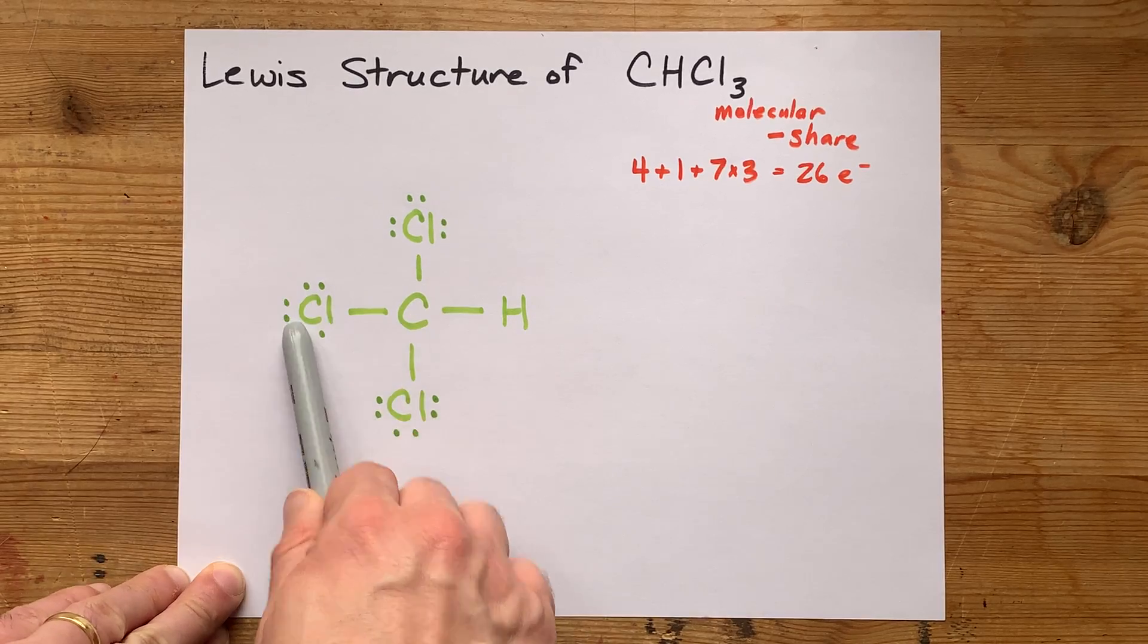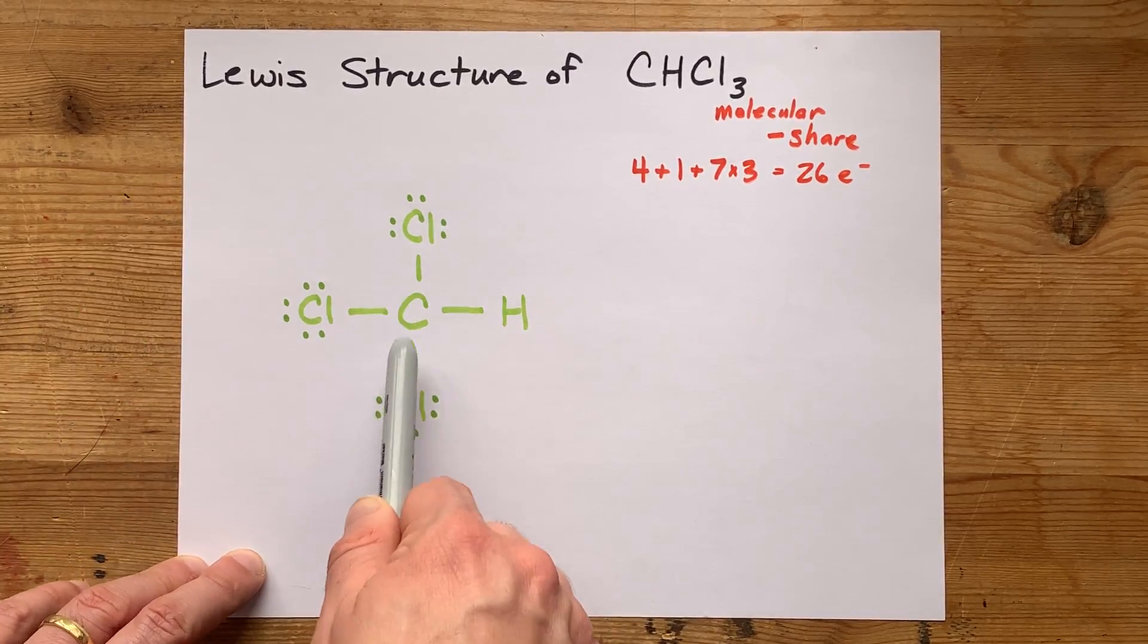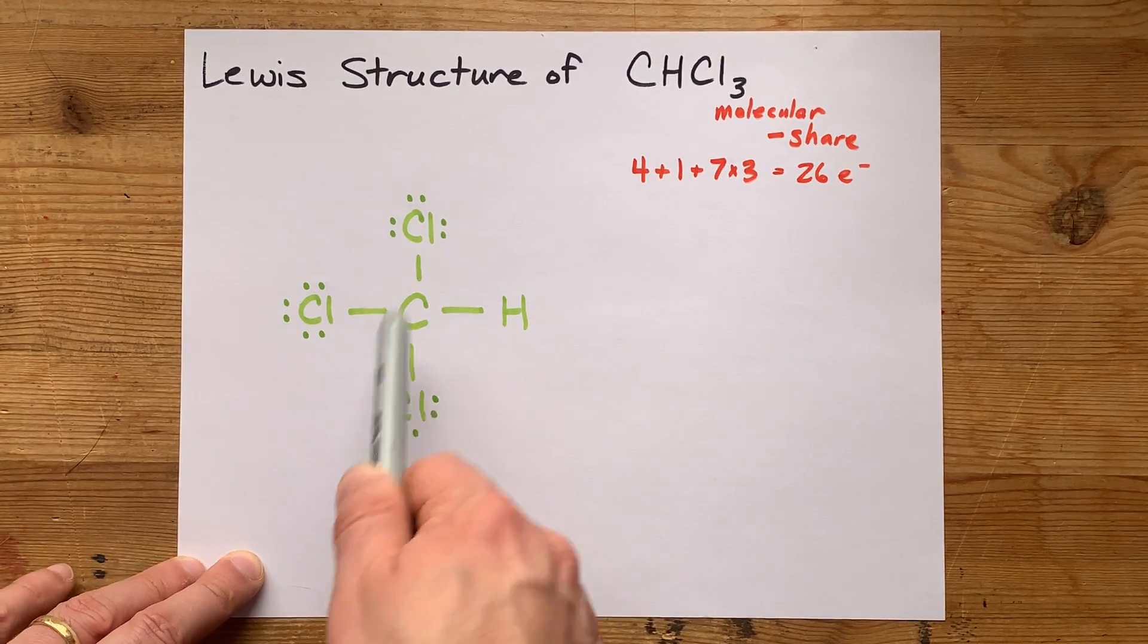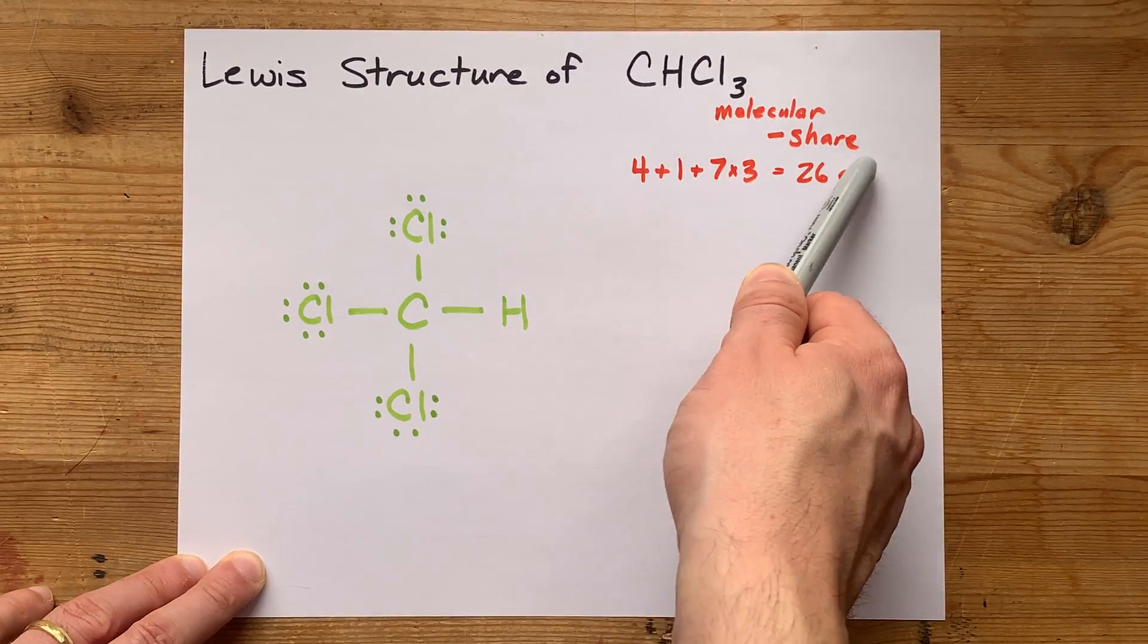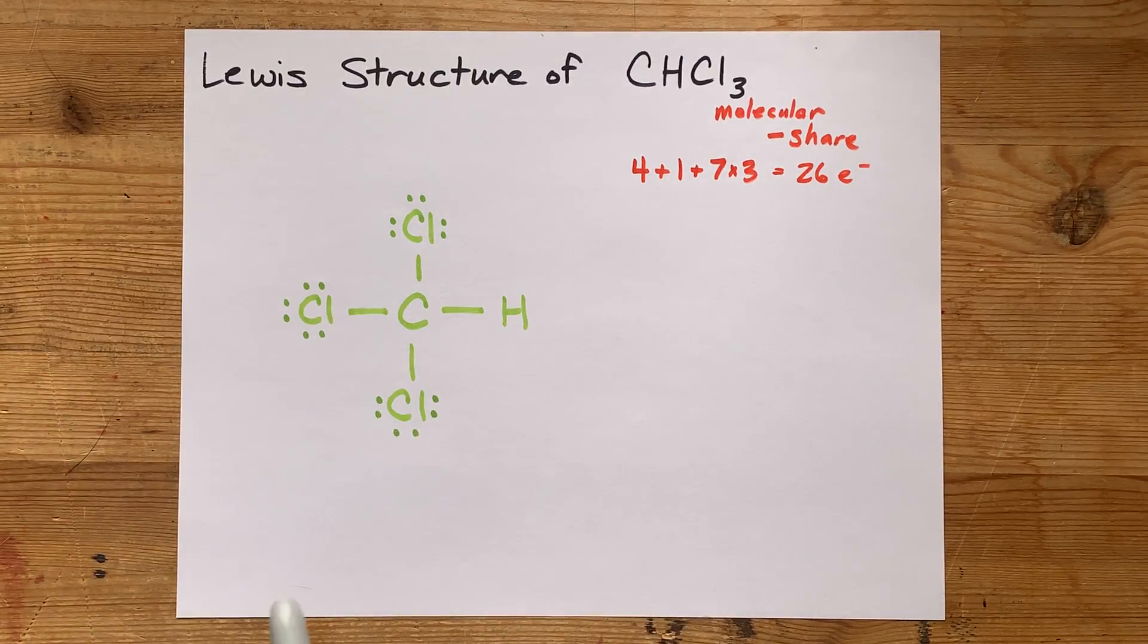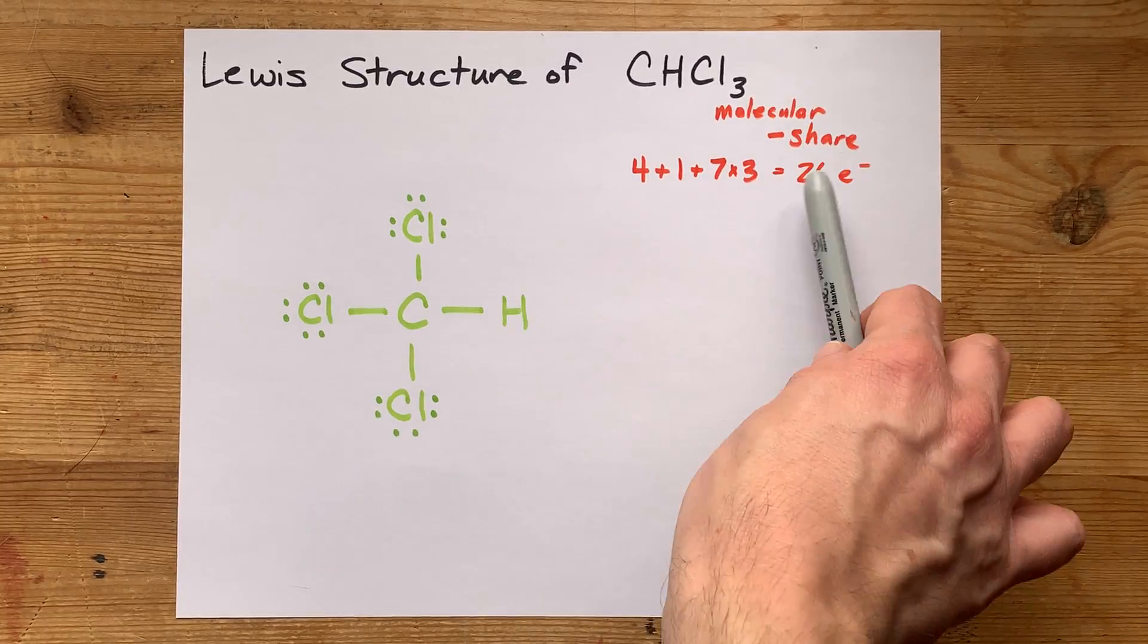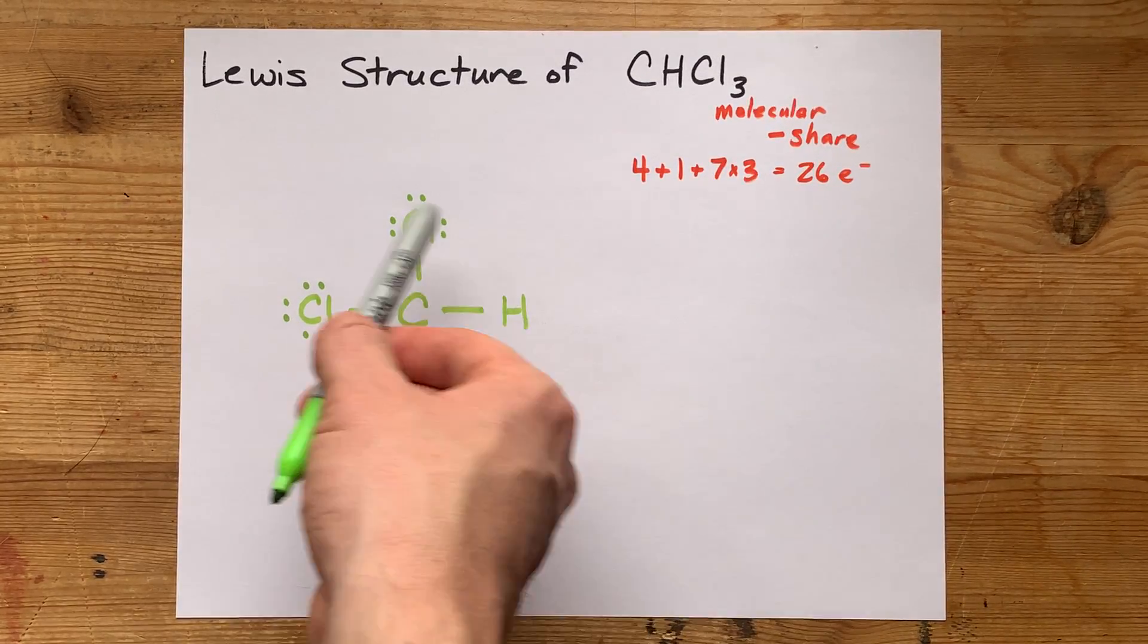Perfect. The octet on each chlorine is full. The octet on this carbon is also full. And I had the exact number of electrons that I needed, or thought I needed, to create the structure. If I had extra electrons here, at this point I would dump them onto the central atom, but I don't, so I won't.